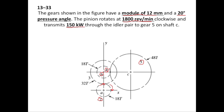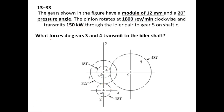Gear 3 and gear 4 are idler gears consuming no power, so all the power from shaft A through gear 2, then gear 3, then gear 4, is totally transmitted to gear 5. We need to find the force on shaft B due to gear 3 and gear 4. Shaft B is in and out of the page, so let's draw that shaft with gear 3 and gear 4 mounted on it.